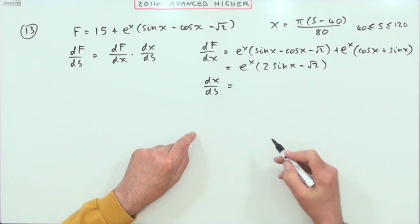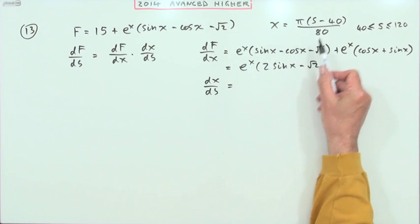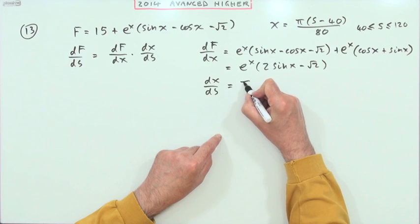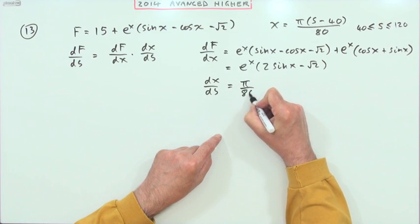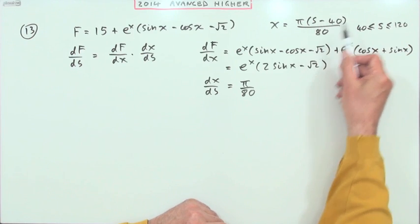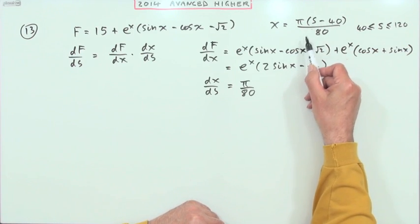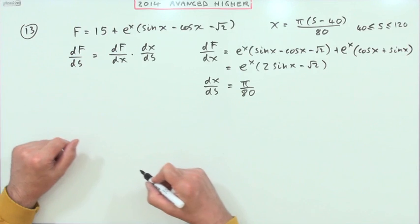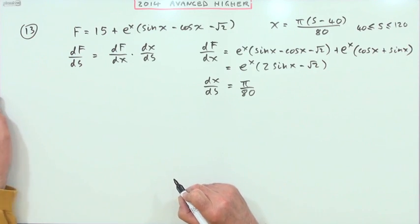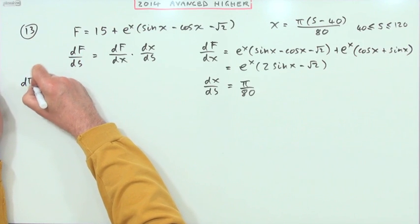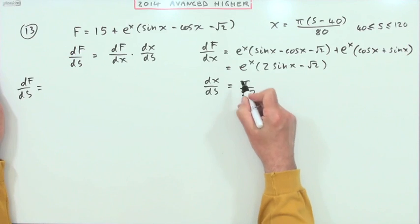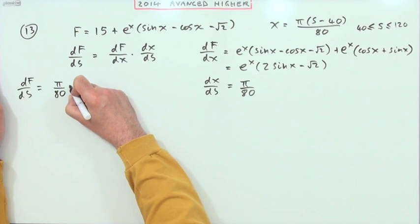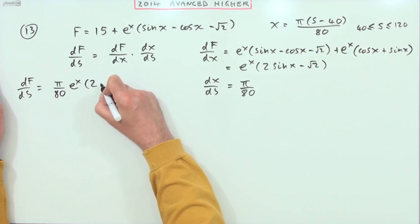Now what's dx/ds? That's just a linear term, so it'll just be π/80. You could expand it as πs/80 minus π·40/80, giving π/80. This means that df/ds = (π/80) · e^x · (2 sin x − √2).